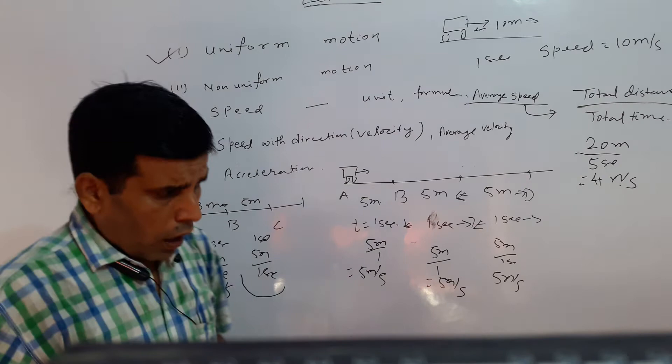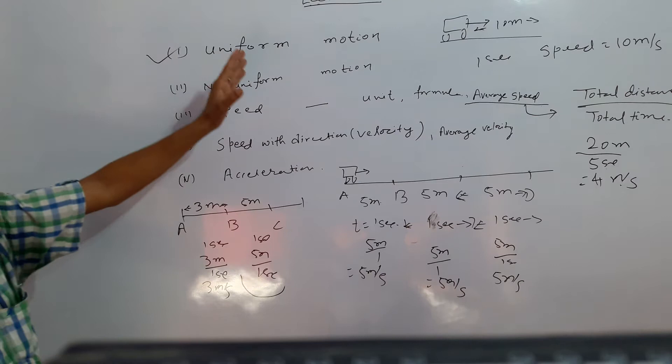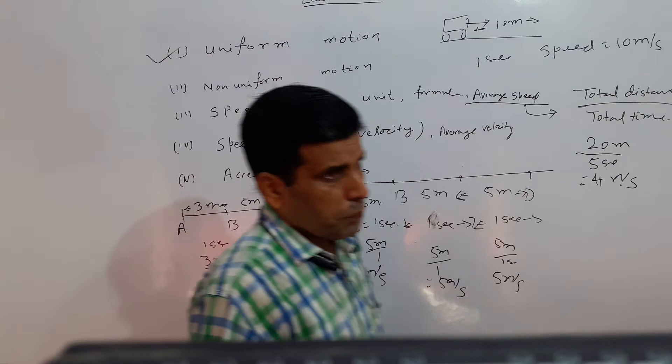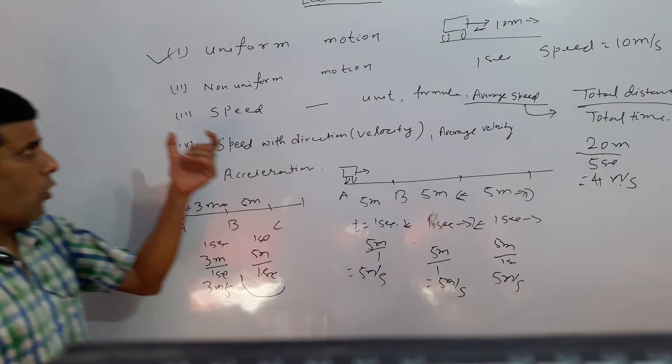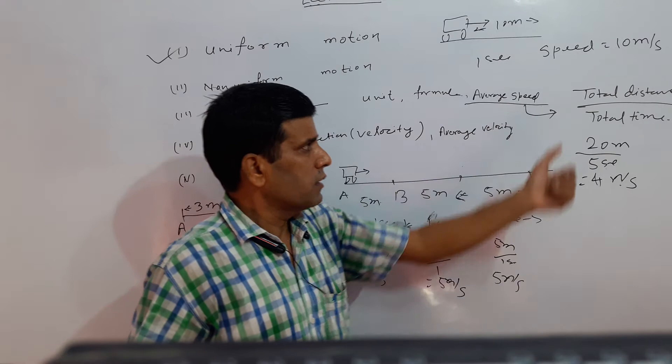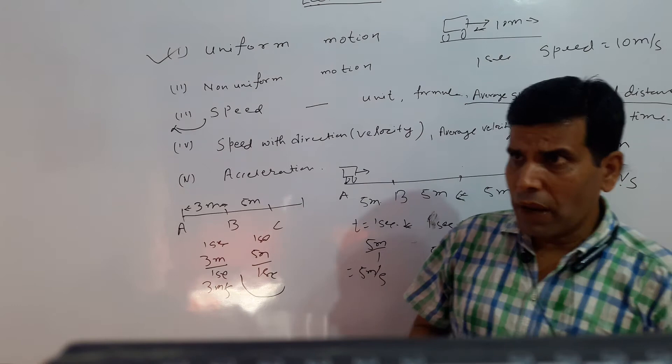So here we have two concepts about speed. First, we divide speed into uniform speed and non-uniform speed. In the uniform speed case, speed is constant. In the non-uniform case, speed is not constant — it changes every interval.